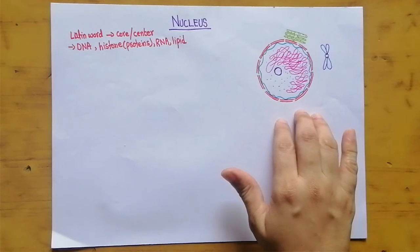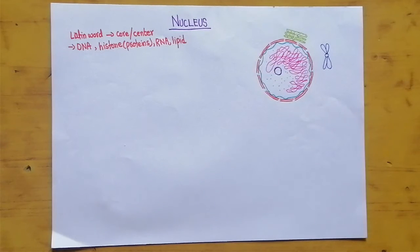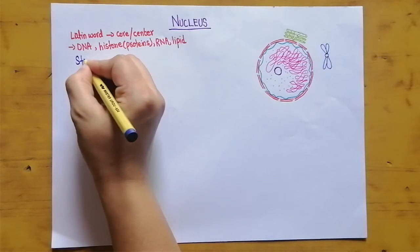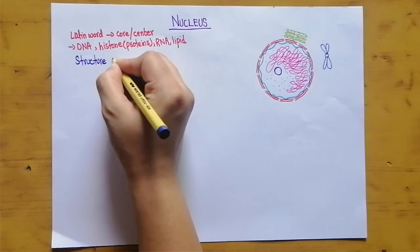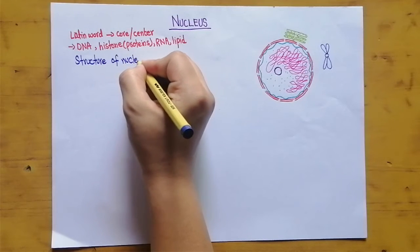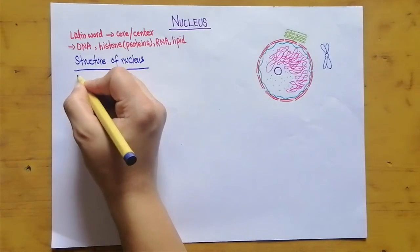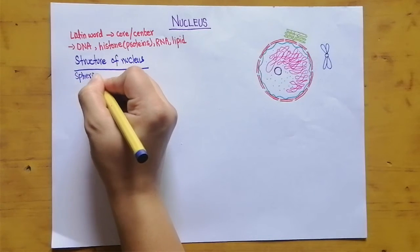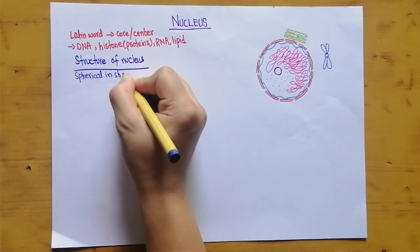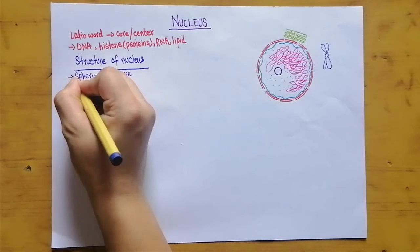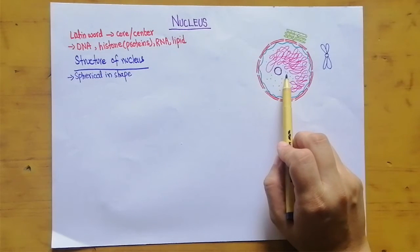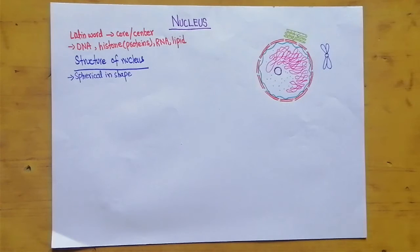I have drawn a structure of the nucleus here which I will label as I explain. The nucleus is spherical in shape. It is present in the center of animal cells, while in plant cells it is present at the side of the cell because of the presence of a large vacuole.